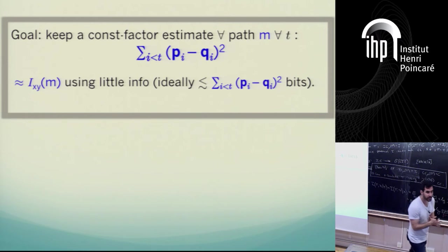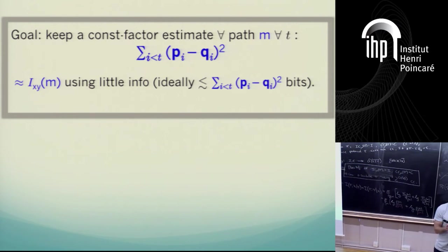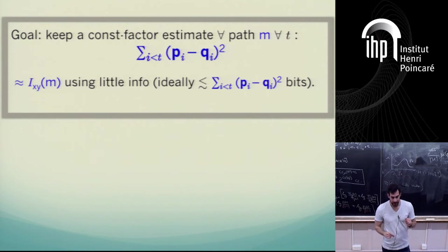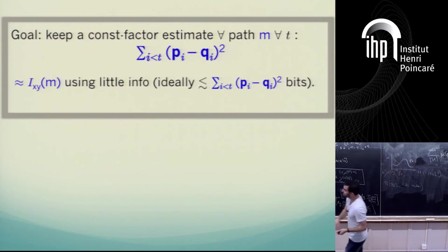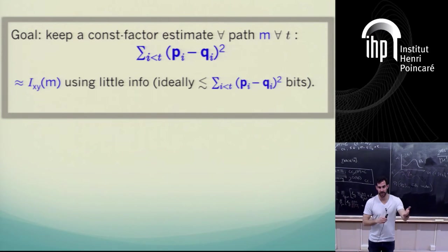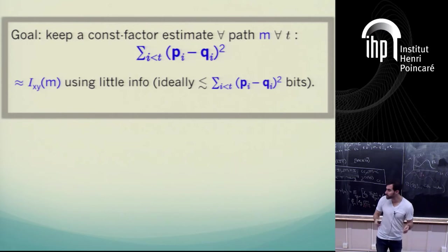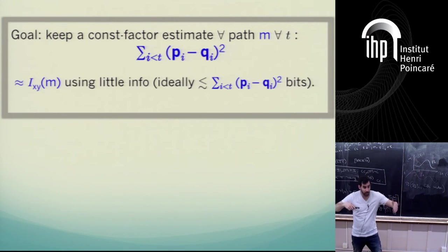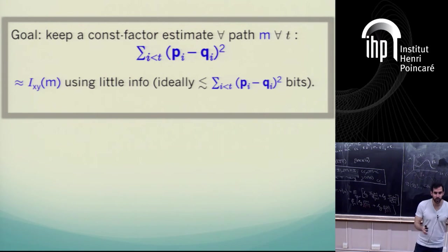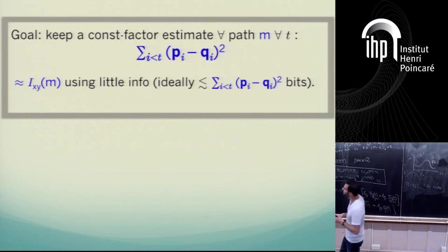Do we agree that this quantity, up to constant factors, corresponds to the per-path information — the divergence cost of this particular path? The point of view is the analysis of a quantity which is the information cost of a path, not the average information cost. I would like an interactive procedure that estimates this quantity for every path communicated — so Boaz and I executing a protocol would, during the course of execution, keep an online estimate of this expression.